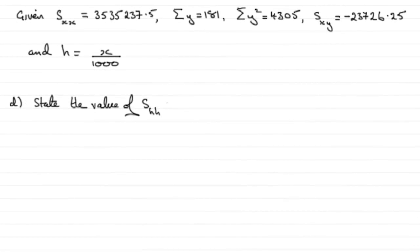Then part B, given the transformation H equals X divided by 1000, we're asked to state the value of s_HH. If it's stated, it's got to be obvious, and indeed it is, but I will explain it in a moment.